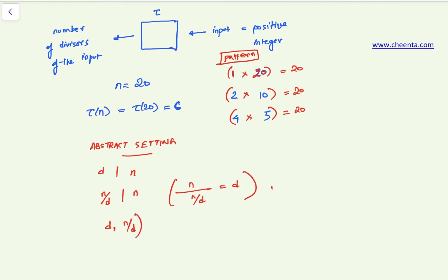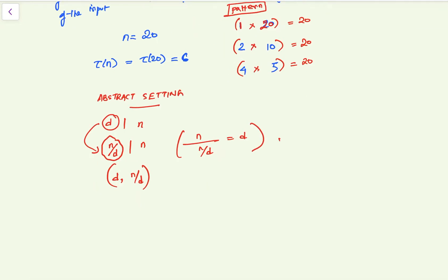Clearly then n by d also divides n, right? Because n divided by n by d is d. So we can pair d with n by d. So each divisor will have its unique pair partner. Now it might so happen that these two numbers are actually same. That is, in the case of 20 it did not happen, each pair partner were distinct, they were different. But could it happen that d and n by d are same?